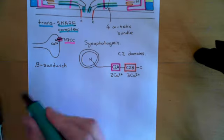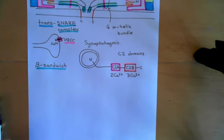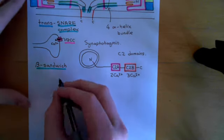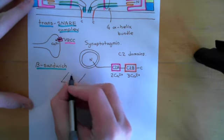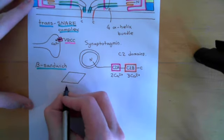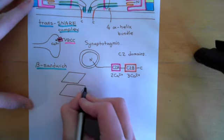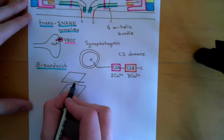A beta sandwich is literally just two beta sheets stacked on top of each other like a sandwich. Here is one beta sheet, and then underneath it you've got another beta sheet — that's why it's called a beta sandwich, because you've got two beta sheets stacked on top of each other.